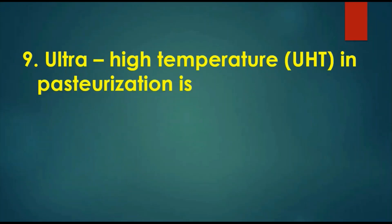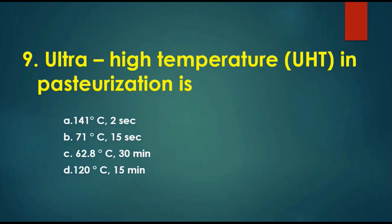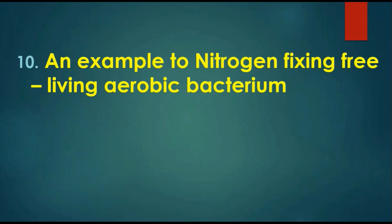Question 9: Ultra High Temperature (UHT) in pasteurization — what is the temperature? Options are: A) 141°C for 2 seconds, B) 71°C for 15 seconds, C) 62.8°C for 30 minutes, D) 120°C for 15 minutes. UHT is the flash high temperature method used in dairy milk pasteurization. The answer is 141°C for 2 seconds.